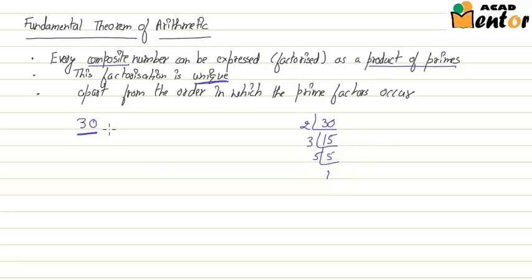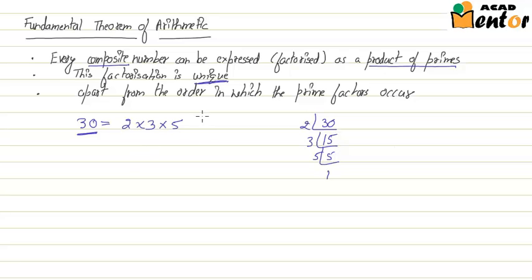So 30 is factorized as 2 multiplied by 3 multiplied by 5. We can see that this composite number 30 can be expressed as a product of prime numbers: 2, 3, and 5. Also, when we combine or multiply 2, 3, and 5, we can only get the number 30 and no other number. So this combination of 2, 3, and 5 is unique only to the number 30.